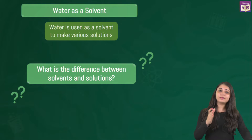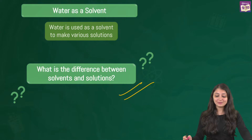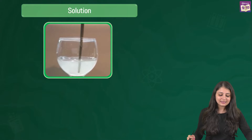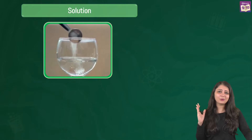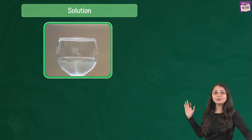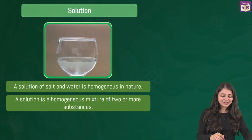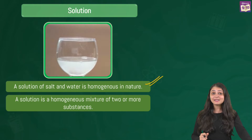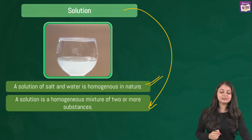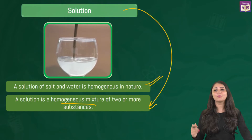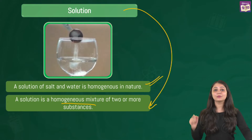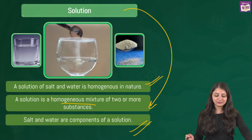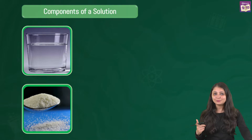I've used two terms: solvent and solution. When salt is added to water, it makes a uniform composition — the same throughout — which seems like a homogeneous mixture. A solution of salt and water is homogeneous in nature; there is no distinct boundary of separation between the particles. So solutions are homogeneous mixtures of two or more substances. In this case, the components are salt and water.